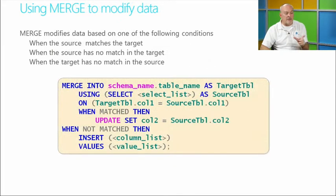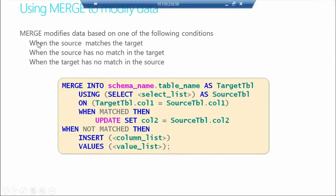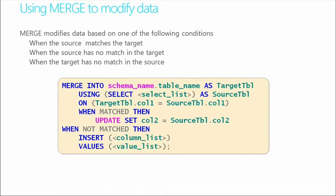Another way we can modify data is called the MERGE. This is where we can use a MERGE to modify data based on conditions: source matches the target, source has no match in the target, or the target has no match in the source. This is a nice way to update content within a database. We'll do a demo to look at MERGE and also show a bit of XML functionality, which fits nicely into this particular topic.